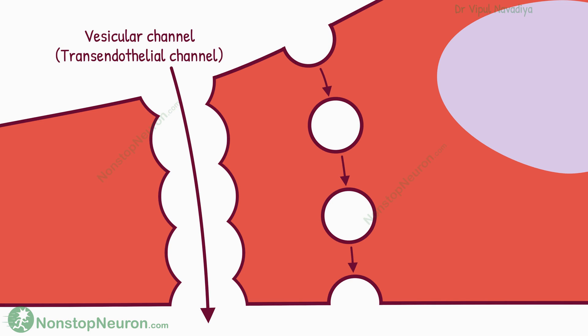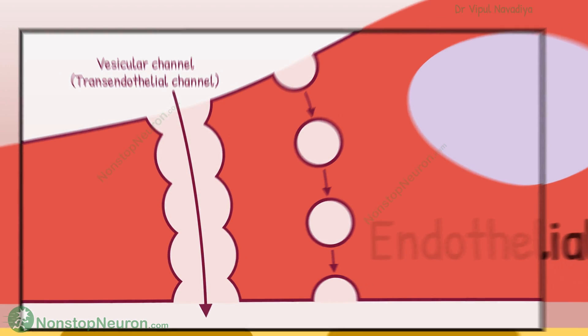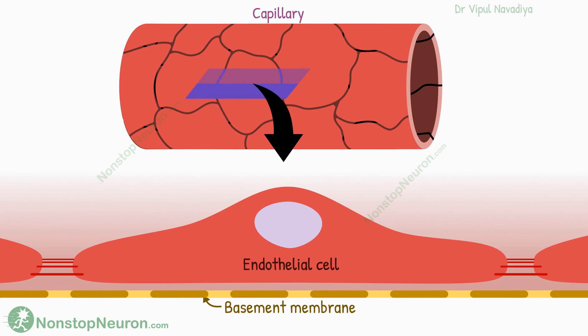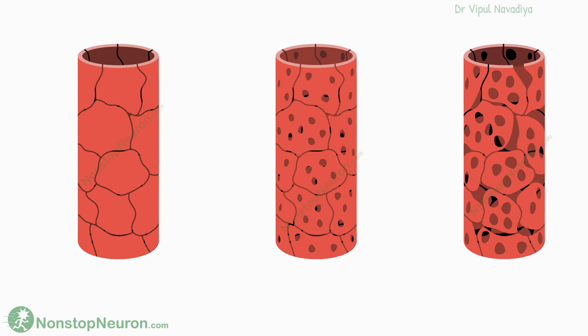Of course, the process of transcytosis and vesicular channels occur at multiple places in one endothelial cell. So this was about the passage through the endothelial cell. This is a general structure. Variations in this general morphology can broadly create three different types of capillaries with varying permeability. These types are continuous capillary, fenestrated capillary, and discontinuous capillary.